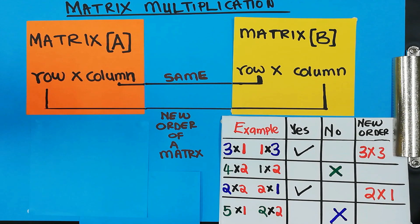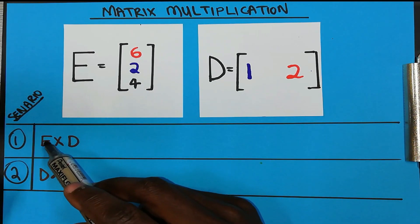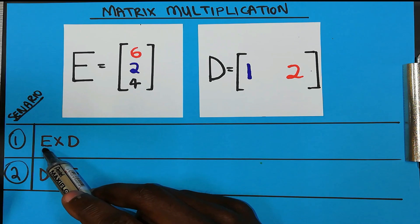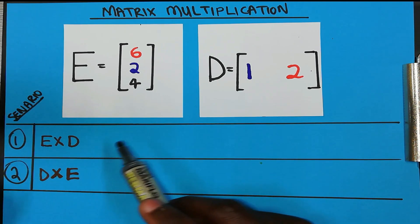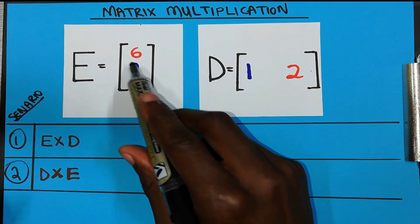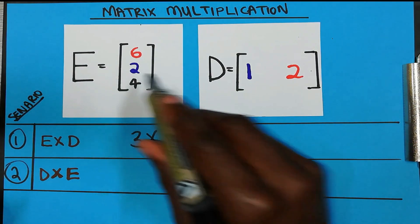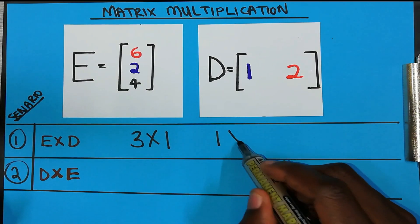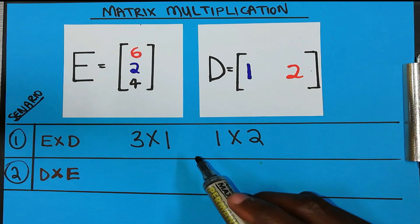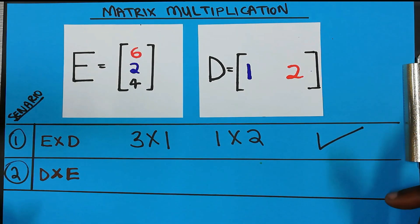That covers matrices — let's jump to the next part. Say you want to multiply matrix E and matrix T for the first scenario. The first thing you need to do is determine the order: this one is a 3 by 1 matrix and that one is a 1 by 2 matrix. The middle numbers are the same, meaning you can continue with the multiplication.